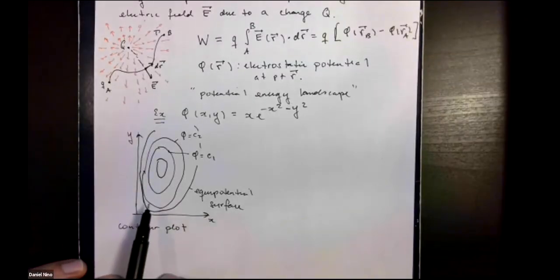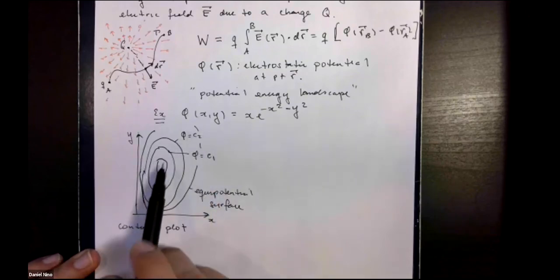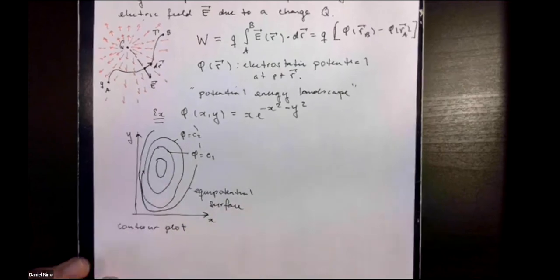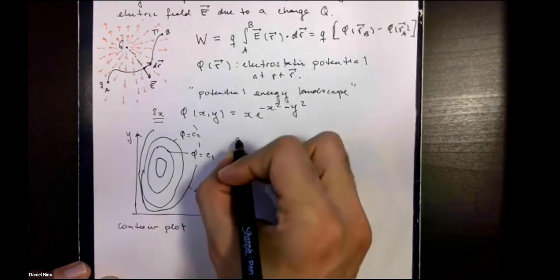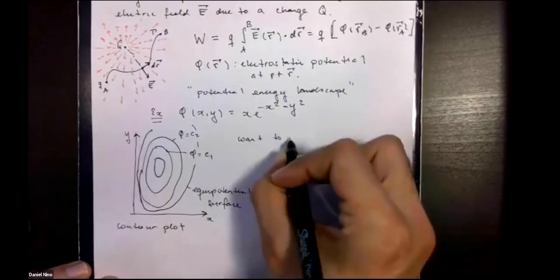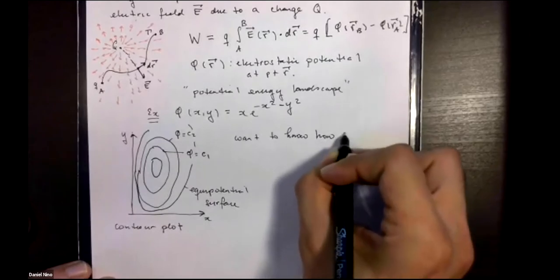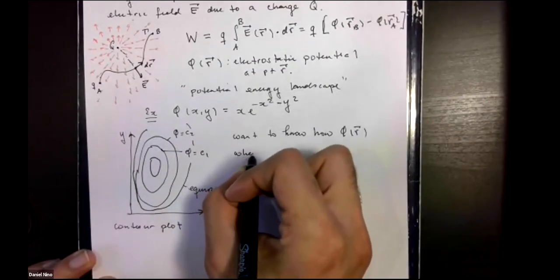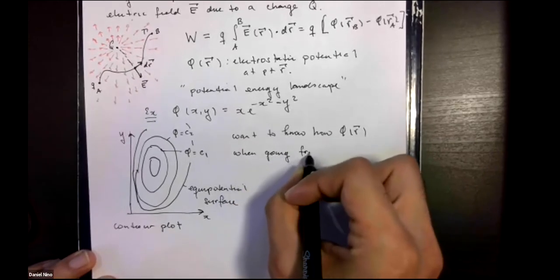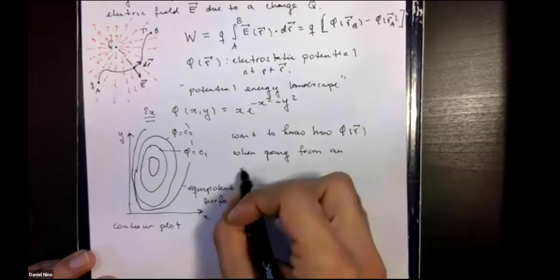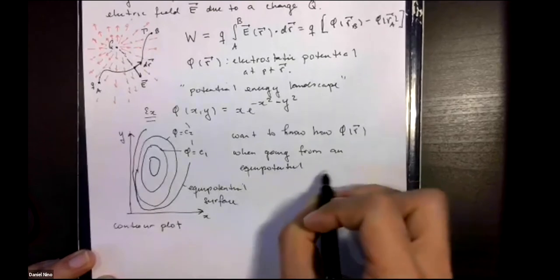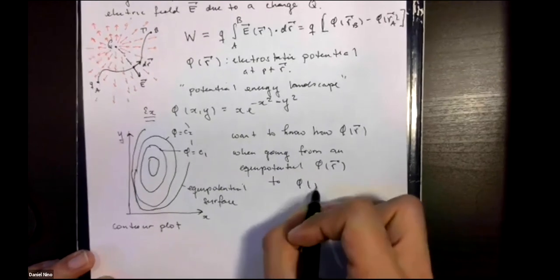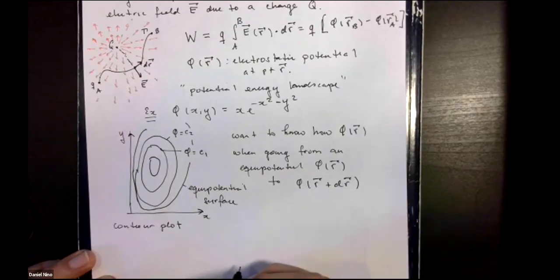So I've sketched out roughly what the equipotential surfaces for this function look like. Just to orient you here a little bit, each one of these lines is an equipotential surface represented as a contour plot. And we want to know how our potential energy changes when you go from one equipotential, say at position r, to another equipotential at r plus dr.